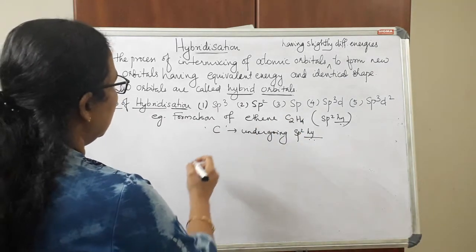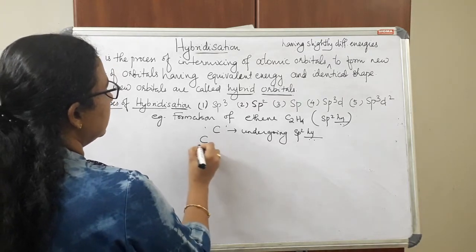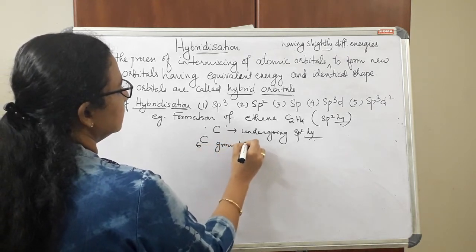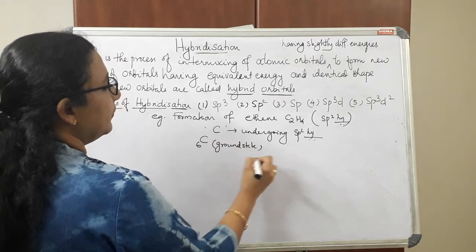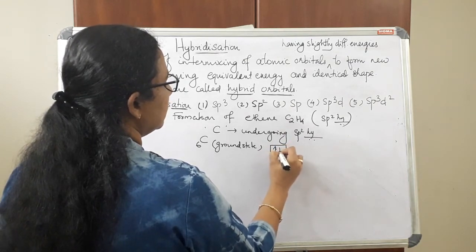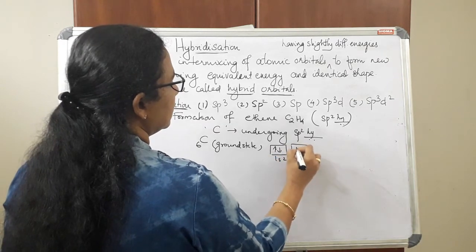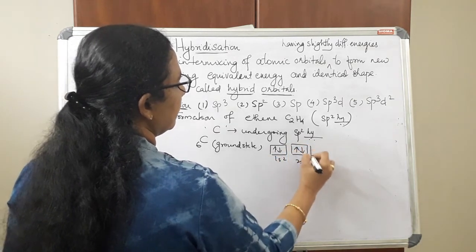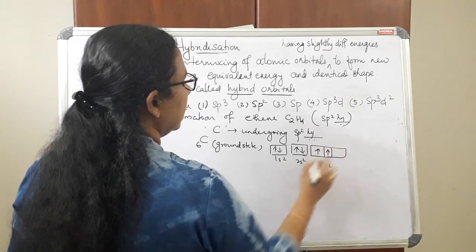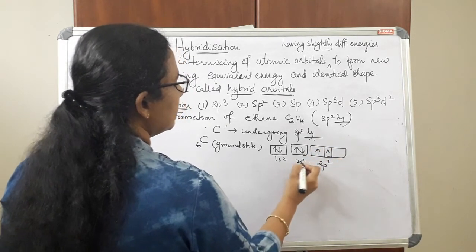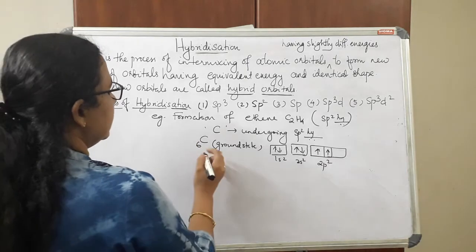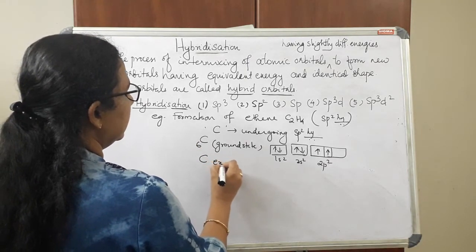We can write the electronic configuration of carbon. Carbon has atomic number 6, and its ground state electronic configuration is 1s2, 2s2, 2p2. We can draw the orbital diagram showing 1s2, 2s2, and 2p2.